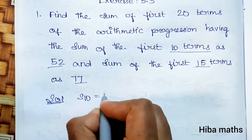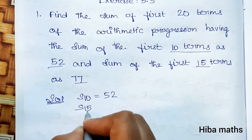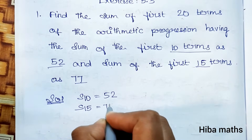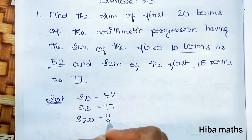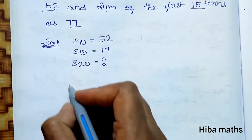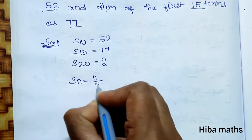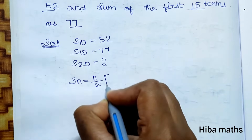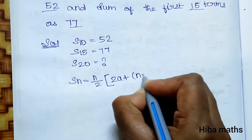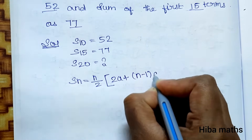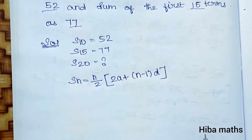To solve this, we use the formula: S(n) is equal to n by 2 into 2a plus n minus 1 into d. This is the formula for the sum of an arithmetic progression.